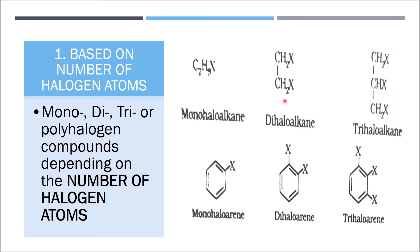When two hydrogen atoms are each substituted by one halo group, we get a dihaloalkane or dihalo derivative. Similarly, when there are three halogen atoms it is called a trihaloalkane. Likewise, replacing one or more hydrogen atoms in a benzene ring gives mono, di, tri, or polyhalogen compounds.